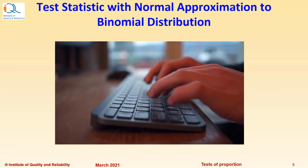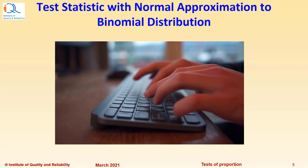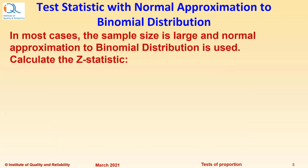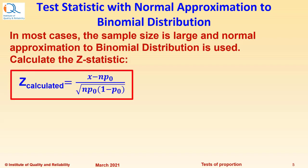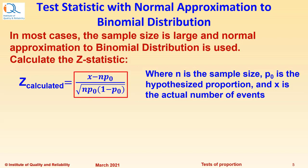Let us see how to calculate test statistic with normal approximation to binomial distribution. In most cases, the sample size is large enough and normal approximation to binomial distribution can be used. We calculate the Z statistic in such cases as Z equals x minus np0 upon square root of np0 times 1 minus p0. Where n is the sample size, p0 is the hypothesized proportion and x is the actual number of events.